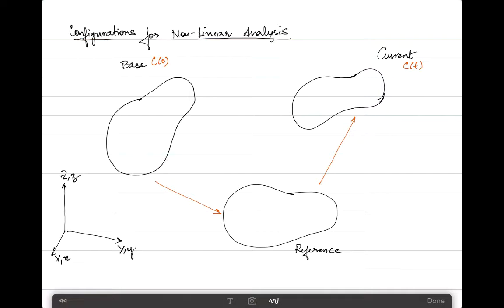The reference configuration is an intermediate configuration used in some nonlinear analyses, while in other cases it coalesces with the base configuration. As a starting point, we leave it as is, but you can assume that the base and reference configurations can be used as one and the same.